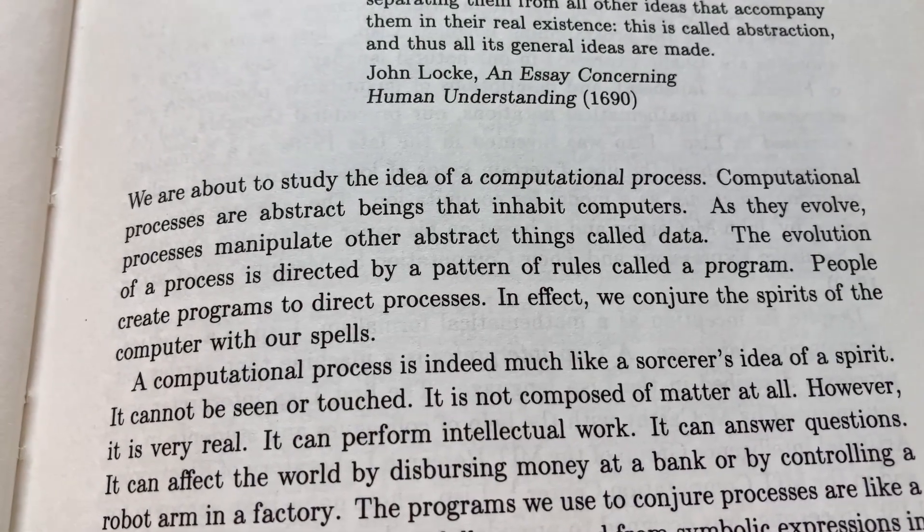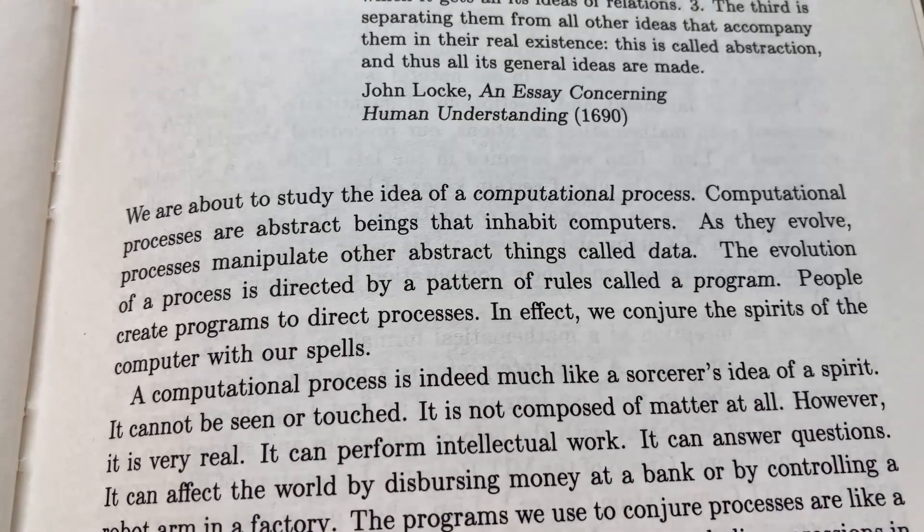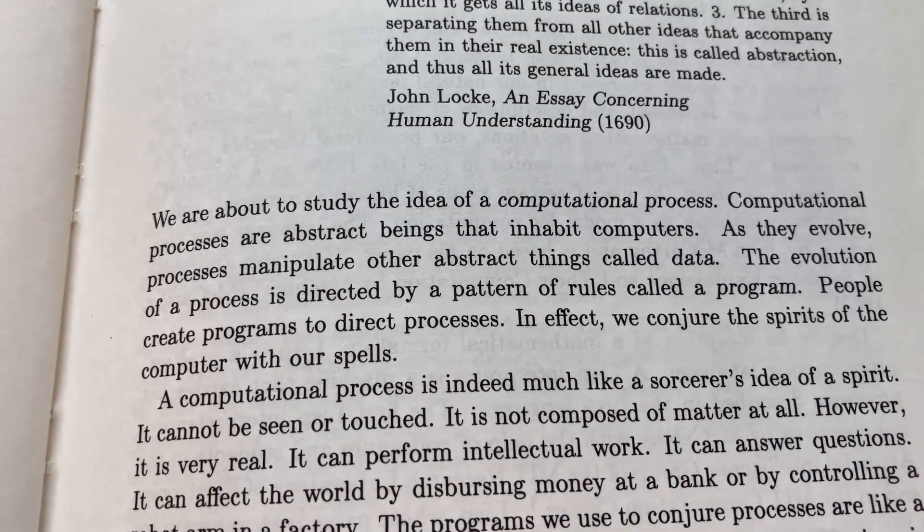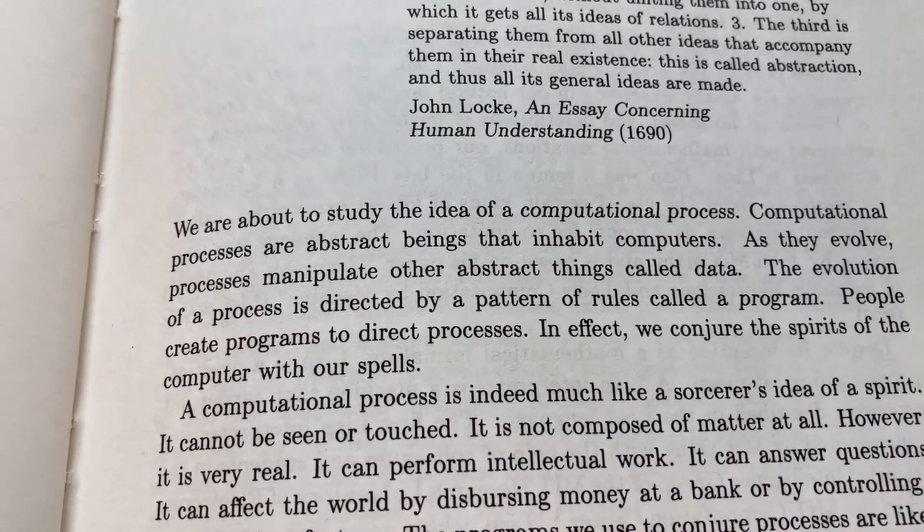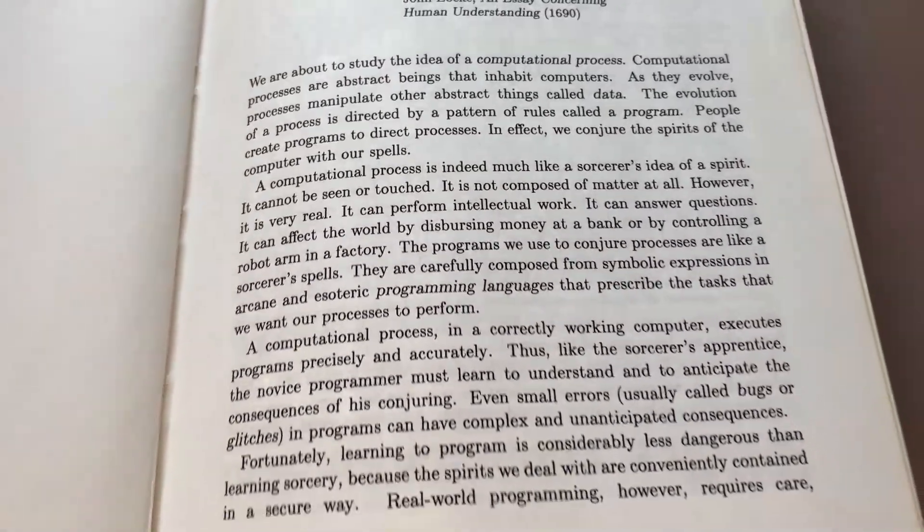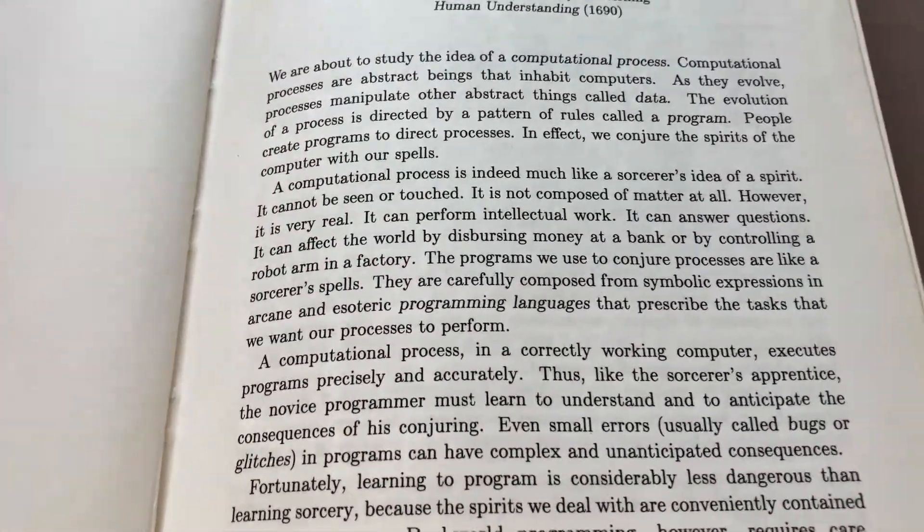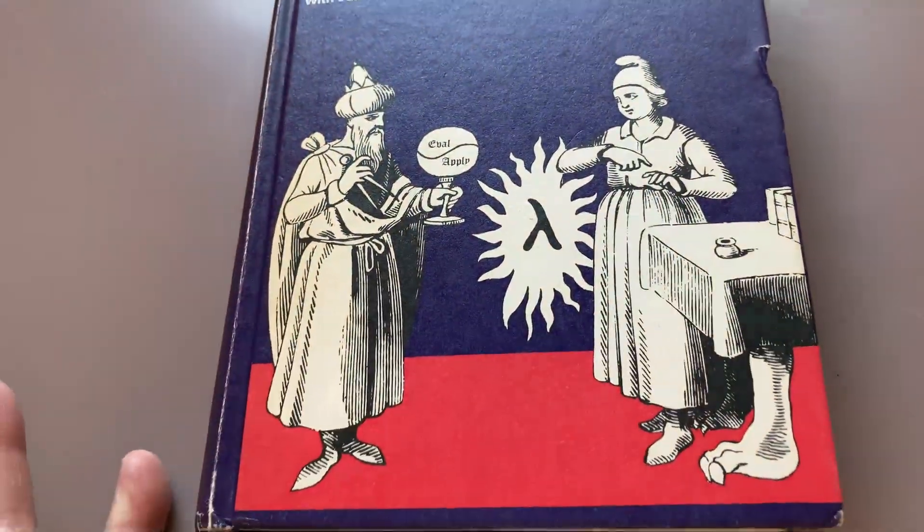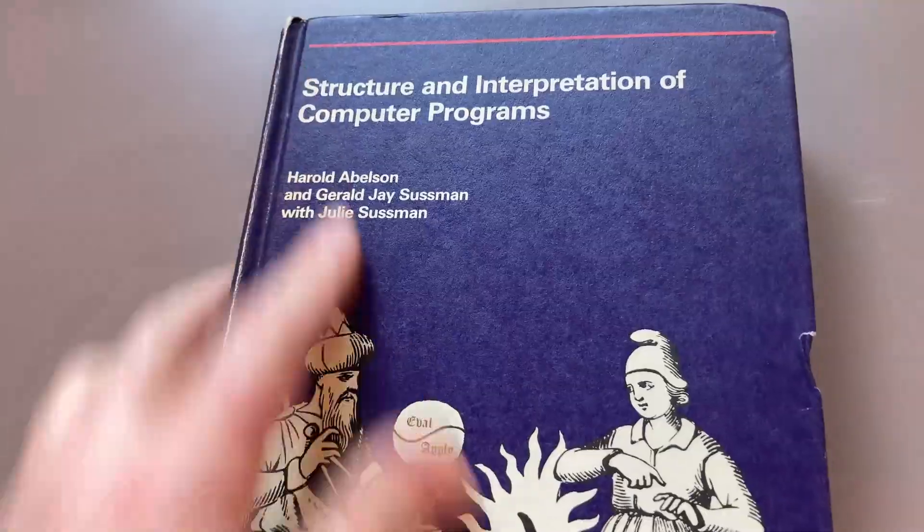The evolution of a process is directed by a pattern of rules called a program. People create programs to direct processes. In effect, we conjure the spirits of the computer with our spells. Indeed, this is a wizard book. Which makes it so cool because this is the math sorcerer YouTube channel. So you can become a computer science sorcerer with this book.